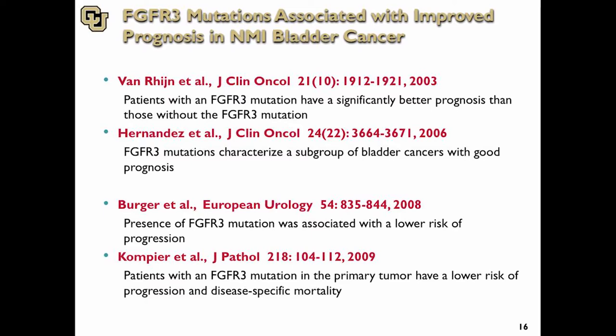Interestingly, if you look at mutations of FGFR3 and other genes — PIK3CA and P53 — the profile of the recurrent tumor is the same as the mutational profile of the original tumor. That's important because if you can detect cancers by mutation, it's really important that the recurrent tumor looks the same. If the recurrent tumor looks very different, you won't be able to pick it up with those mutations unless you have a large panel, which we now can do.